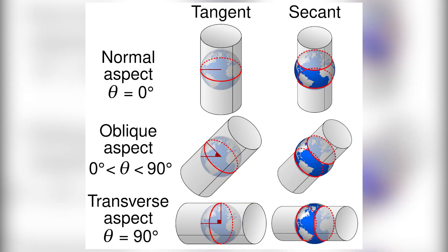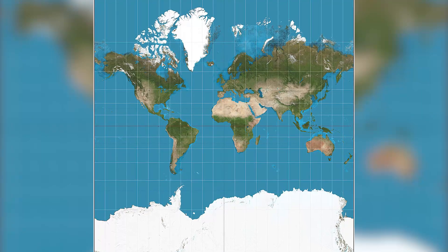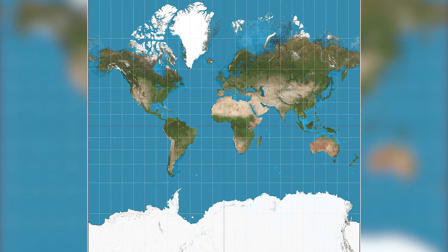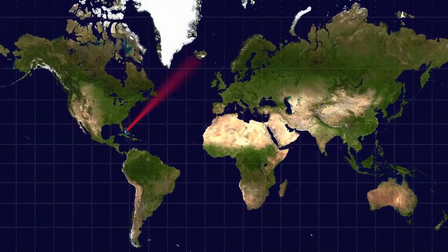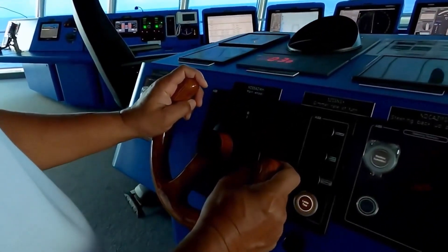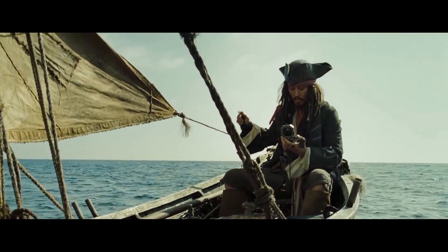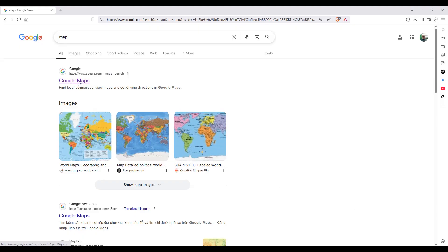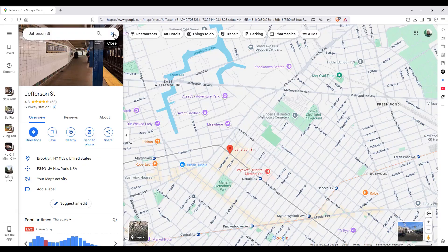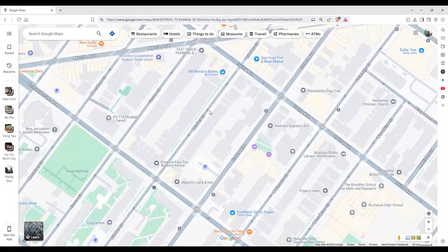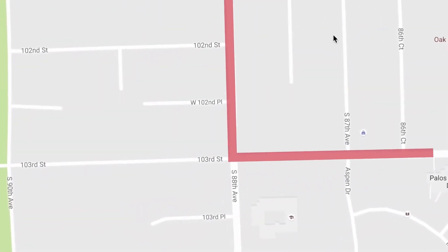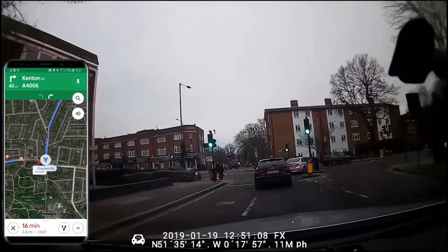The Mercator projection preserves angles, directions, and the shapes of small objects, making it perfect for navigation, especially for sailors. On a Mercator map, a straight line between two points creates a precise angle relative to a compass — sailors just need to steer their ships to keep that angle constant. Mercator's projection isn't just a relic of the past; Google Maps uses it too. Its ability to preserve angles and directions makes city maps incredibly accurate. If two roads intersect at a 90-degree angle on a Mercator map, they will in real life too.